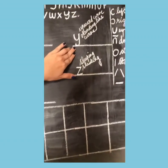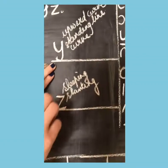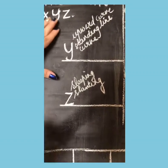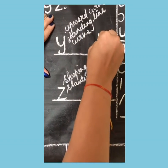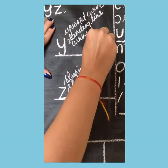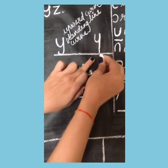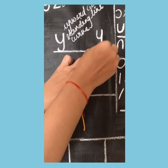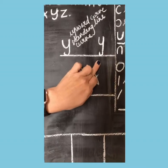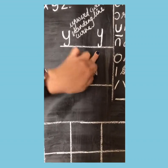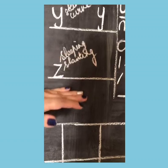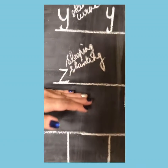To write small Y, you need an upward curve, a standing line, and a small curve. Make an upward curve, stop, make a standing line, and then at the end of this standing line make a small curve like this. This is small alphabet Y.